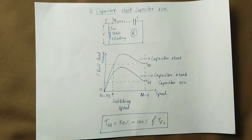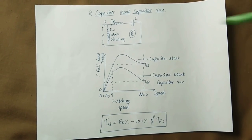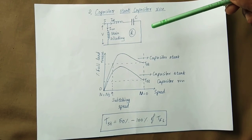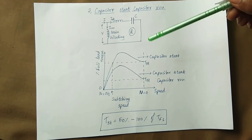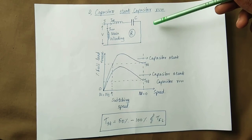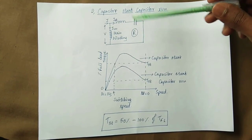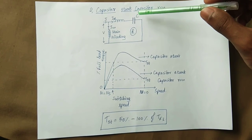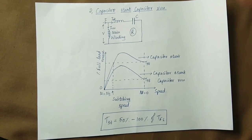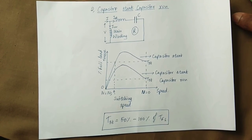The second type is the capacitor-start and capacitor-run motor. The difference is that in capacitor-start capacitor-run, there is no centrifugal switch. The capacitor remains connected during running. The rotor is not disconnected from the capacitor circuit automatically. Because the capacitor continuously provides leading current, the motor runs more efficiently in both starting and running conditions.